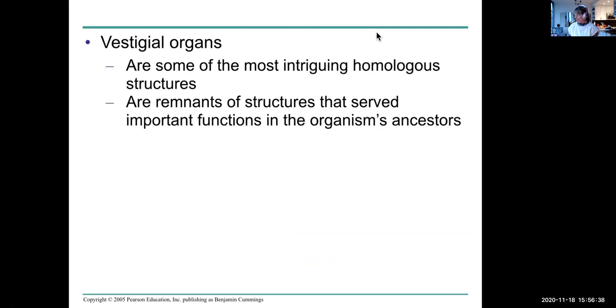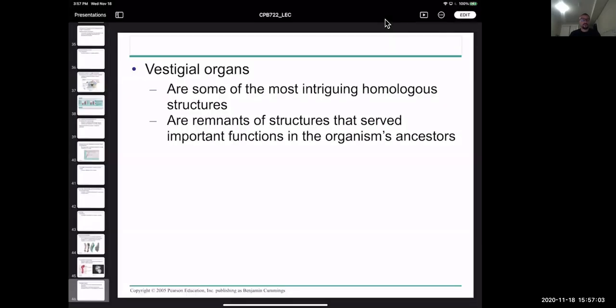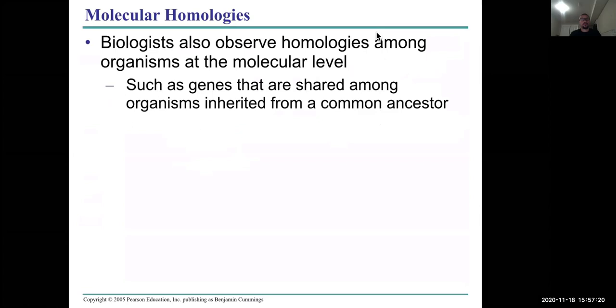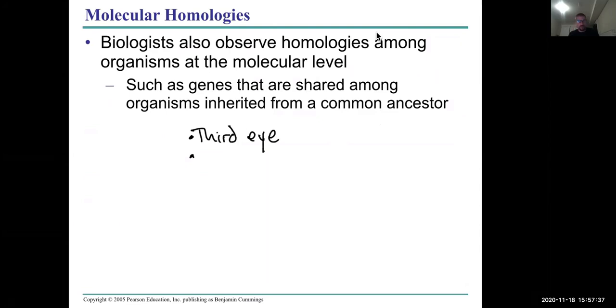And vestigial organs are really intriguing homologous structures. There are remnants of structures that served important functions in the organism's ancestor, but no longer do. So why should they be present? Vestigial organs. Well, let's see. What kinds of vestigial organs do we have? The tailbone? The tailbone. Yeah. The appendix? The appendix is another one. Yeah, we have a third eye. We don't have a third eye anymore, but we do have the remnants of a third eye in the corner. It's what's left over. What was the appendix for? Sorry. What was the appendix for? What was it for originally?